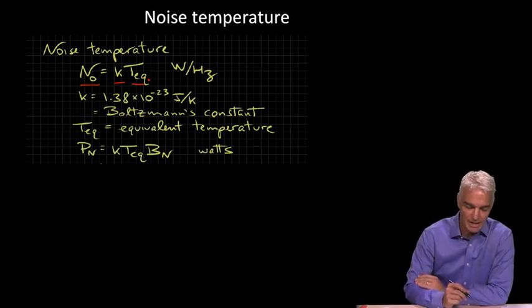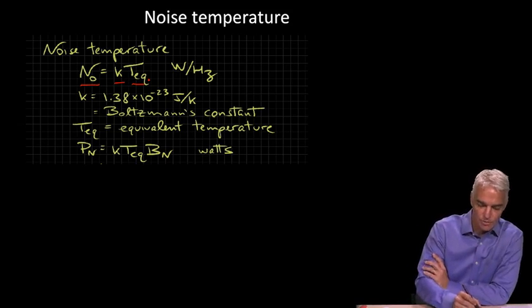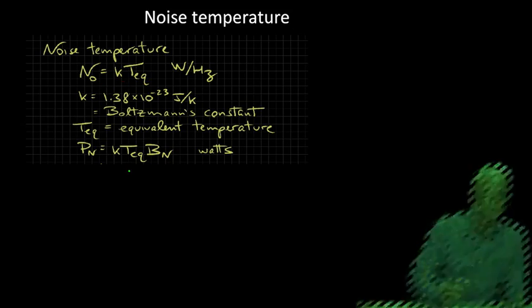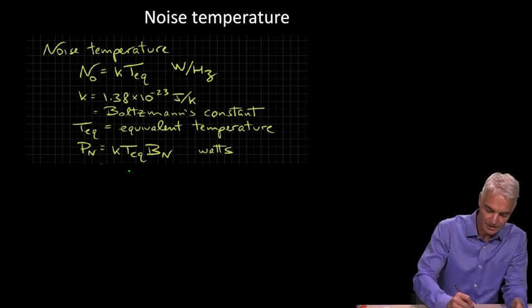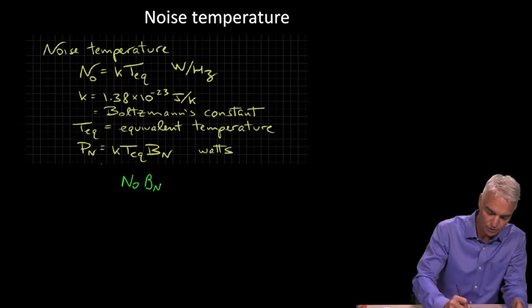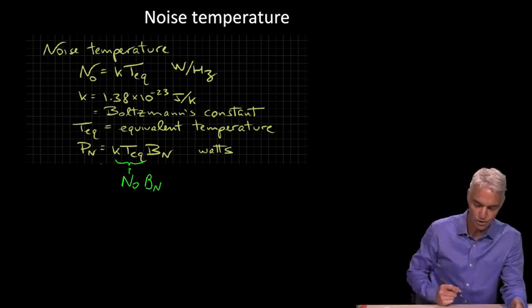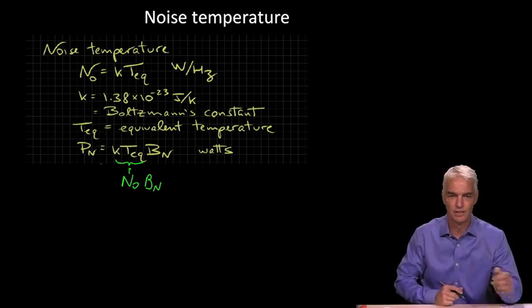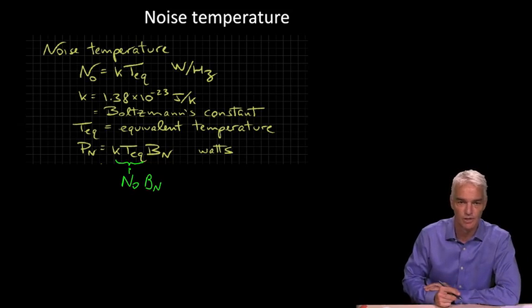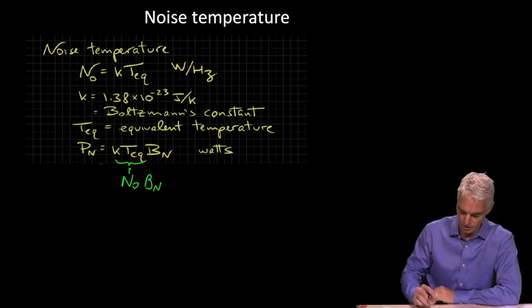If we rewrite the noise power in any bandwidth, on the previous slide we had the noise power as the noise density times the bandwidth. If we replace the noise density with the equation in terms of noise temperature, we see that it's k times the noise temperature times the bandwidth of the noise.